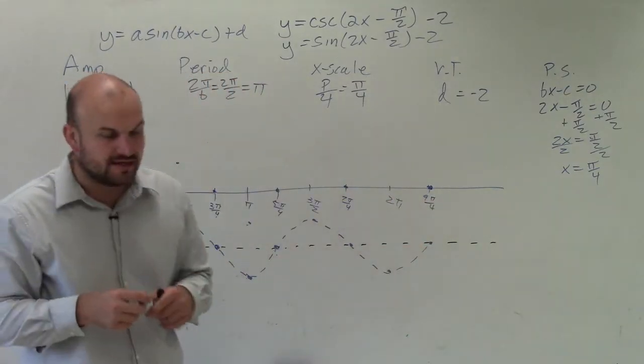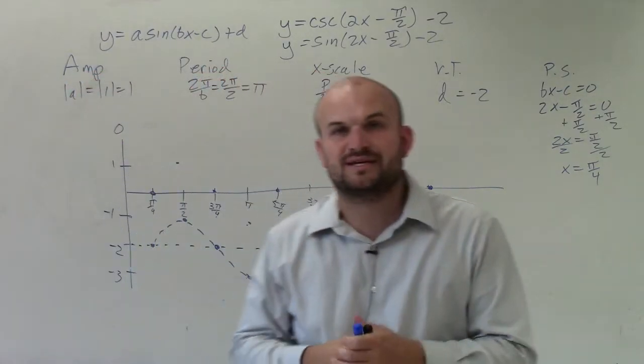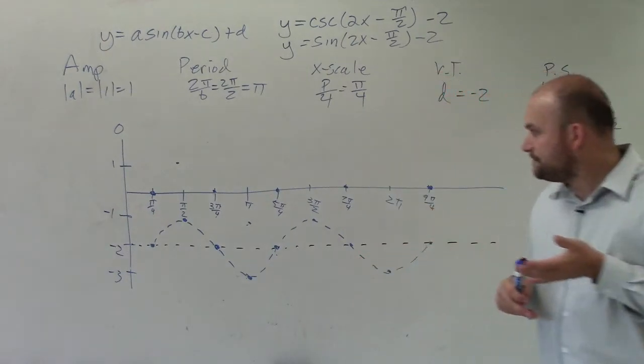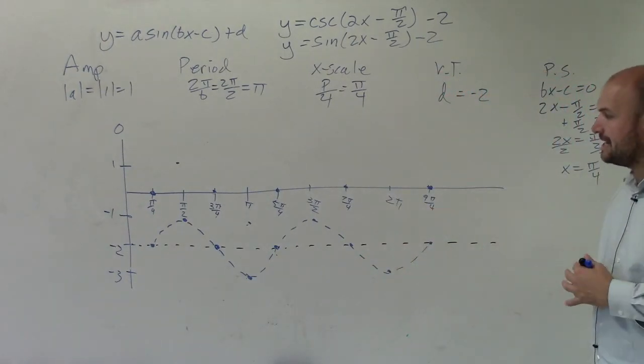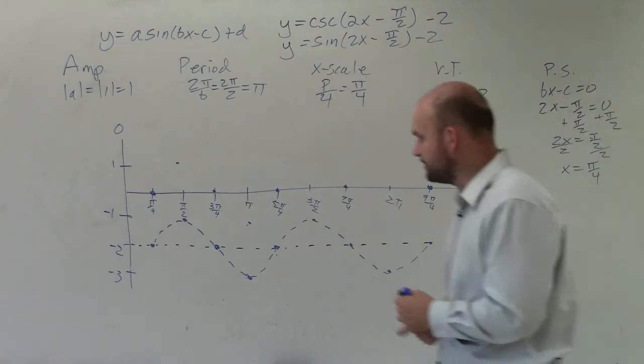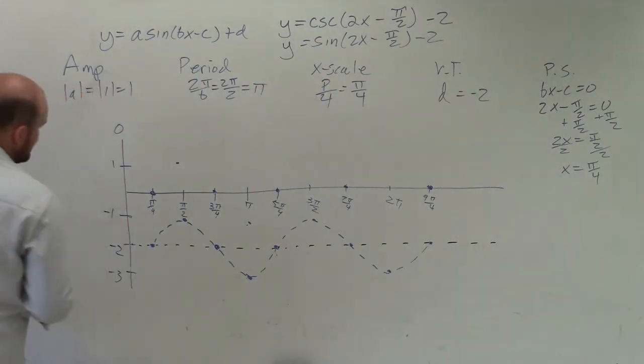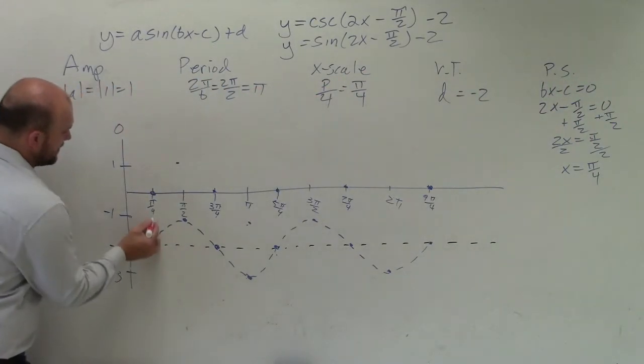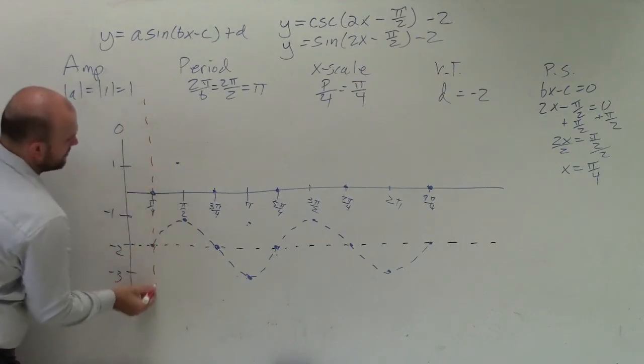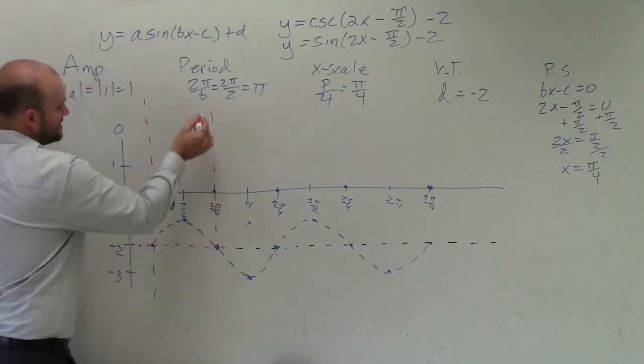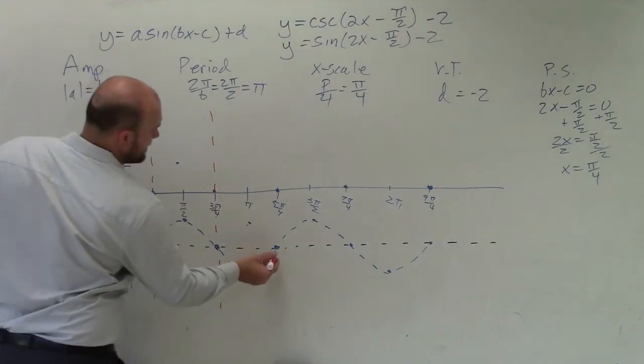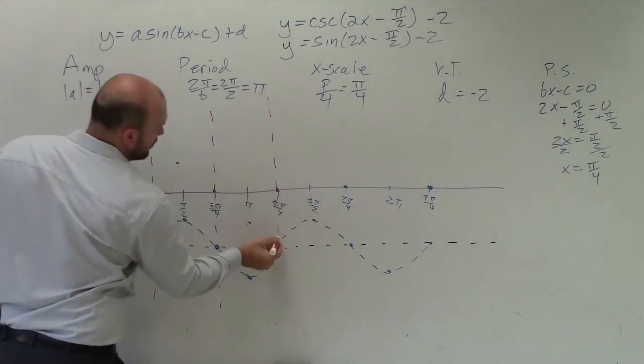That's very important when graphing the reciprocal function, because any time you have an intercept for sine and cosine, that is going to be your asymptote for your reciprocal function. So I need to make sure I note where all those were, and then I'm simply just going to draw in my asymptotes, because your asymptotes are going to be where your graph is going to be approaching for cosecant.